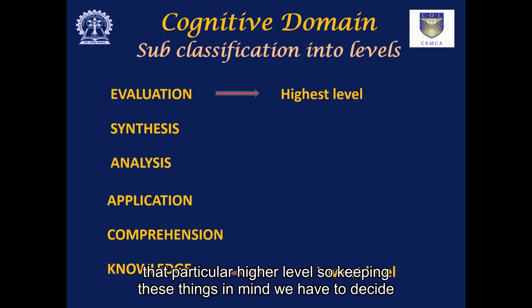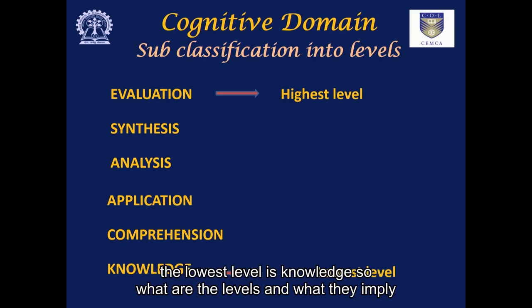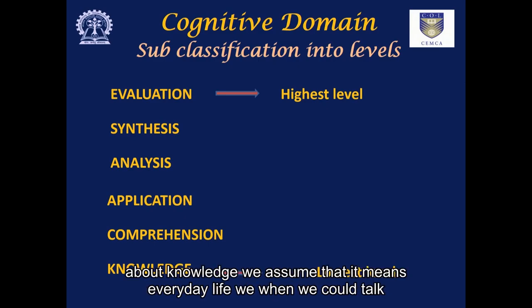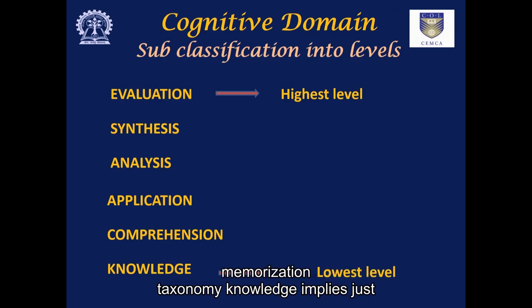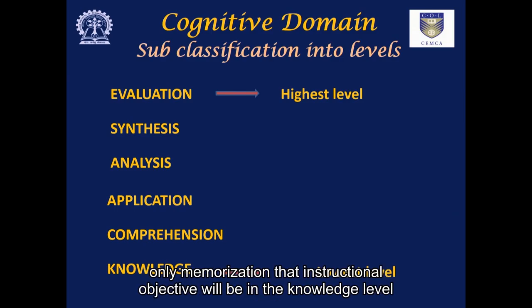Keeping these things in mind, we have to decide which level we should assign each instructional objective to. The lowest level is knowledge. In Bloom's taxonomy, knowledge does not imply wisdom — in everyday life when we talk about knowledge, we assume it means wisdom or expertise. But in Bloom's taxonomy, knowledge implies just memorization, blind memorization. If you make an instructional objective which calls for only memorization, that instructional objective will be in the knowledge level.